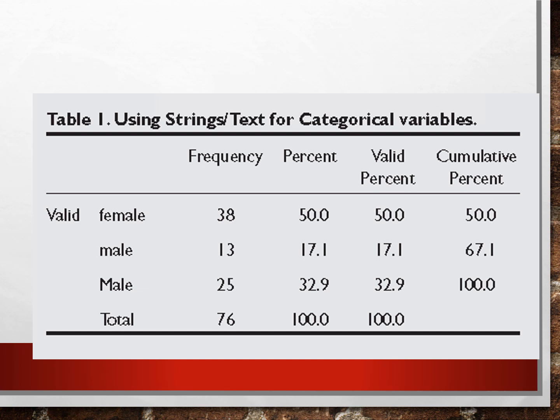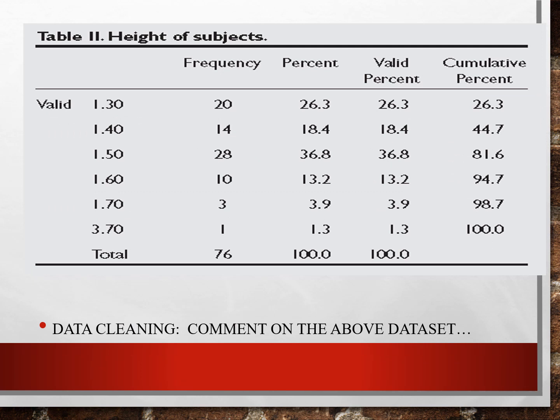For example, this table using strings and text for categorical values are shown. Data cleaning: comment on the above dataset. We could notice that height in meters there's a 3.7, which we all know there's no person with that kind of height, so we could remove it and discard the data.